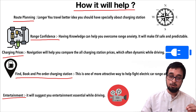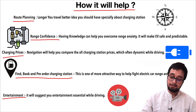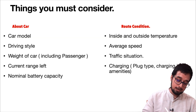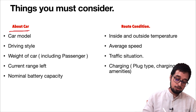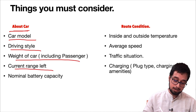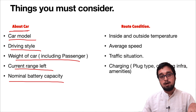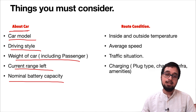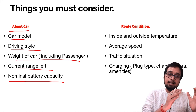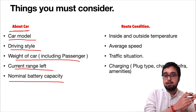Now we will talk about those who are planning to develop these kinds of software. The first thing you must consider is about the car. The points listed here are: car model, driving style, weight of the car, current range, and the nominal battery capacity. EV trip planner basically suggests the smallest or optimal path when traveling from point A to point B.